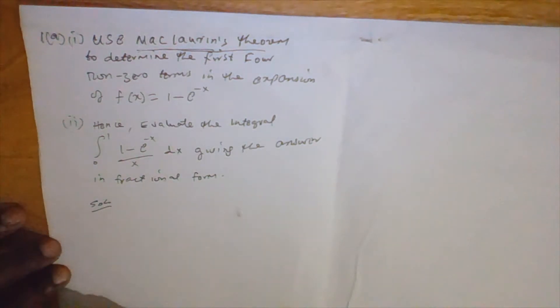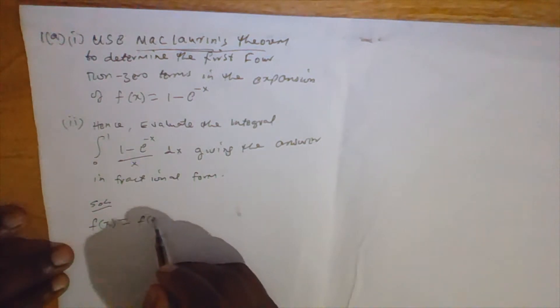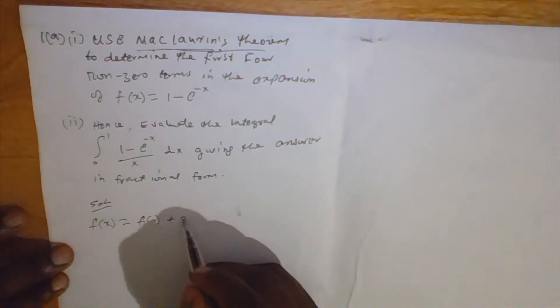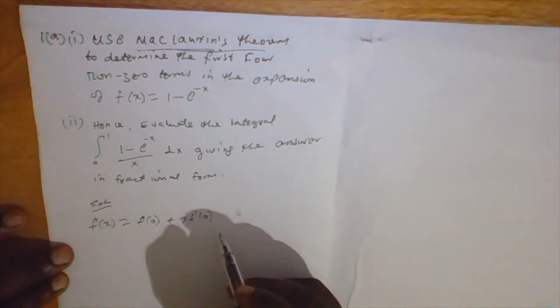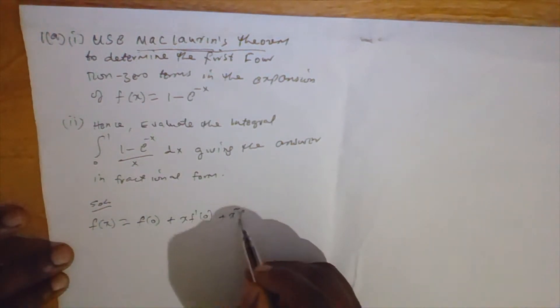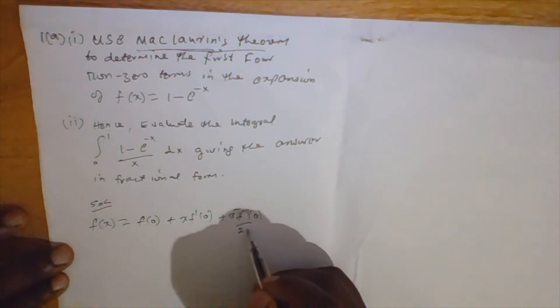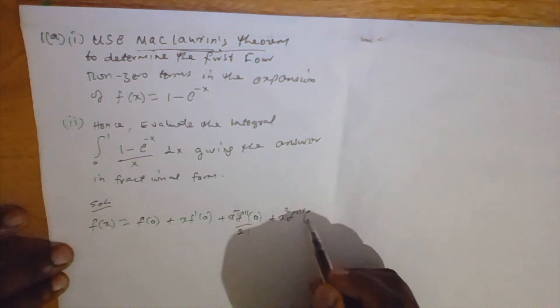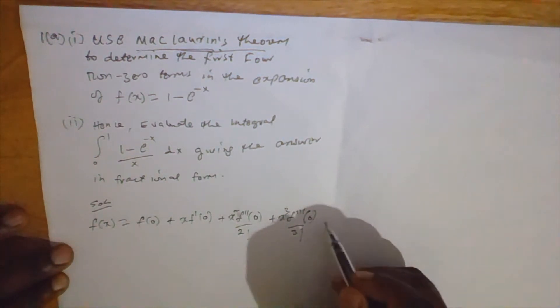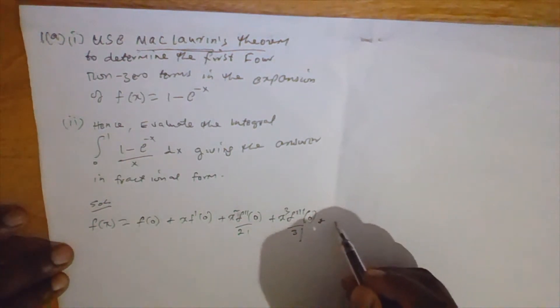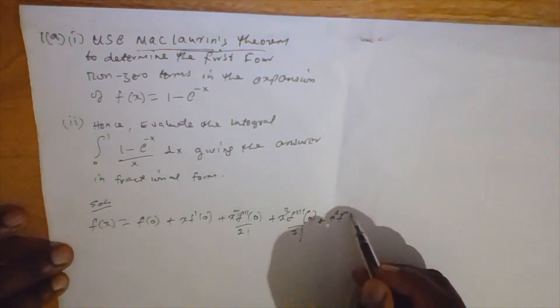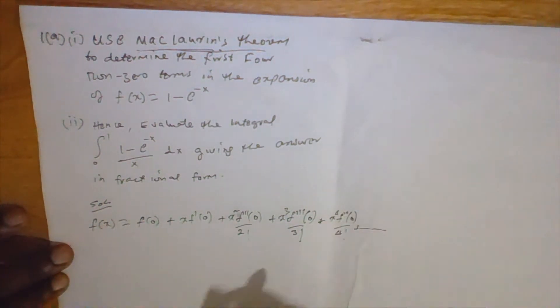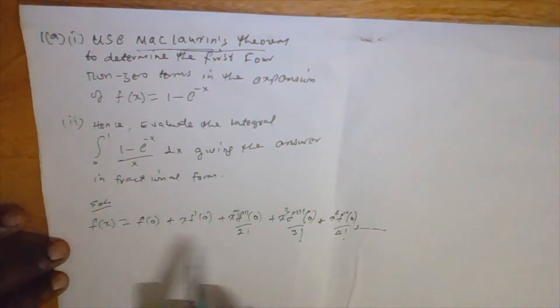Maclaurin's Theorem states that f of x equals f of 0 plus x times f prime of 0 plus x squared times f double prime of 0 over 2 factorial plus x cubed times f triple prime of 0 over 3 factorial plus x to the 4 times f to the fourth of 0 over 4 factorial. This is the Maclaurin series.